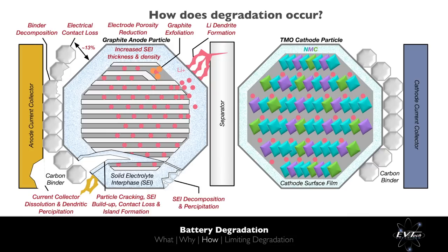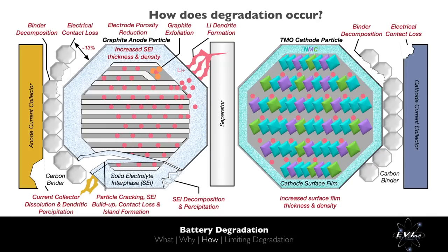As described with the anode, the cathode current collector will also experience dissolution into the electrolyte at very low state of charge, thereby reducing electrical conductivity and increasing resistance. Further, like the anode, at high temperatures the binder will react with the electrolyte and decompose.